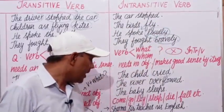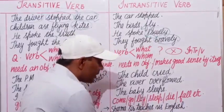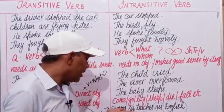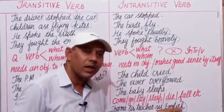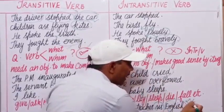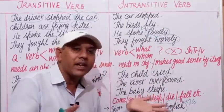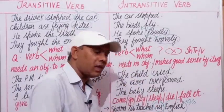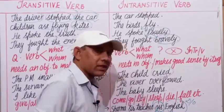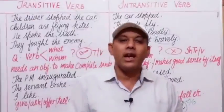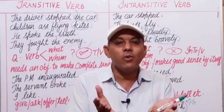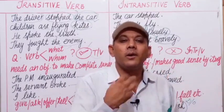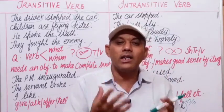For example: 'Sharma Sir teaches us English.' The verb 'teaches' has two objects — us and English. Teaches what? English — that is the direct object. To whom does he teach English? To us — 'us' is the indirect object. Another example: 'He gave me a wristwatch.' What did he give? A wristwatch — direct object. Whom did he give the wristwatch to? Me — indirect object.